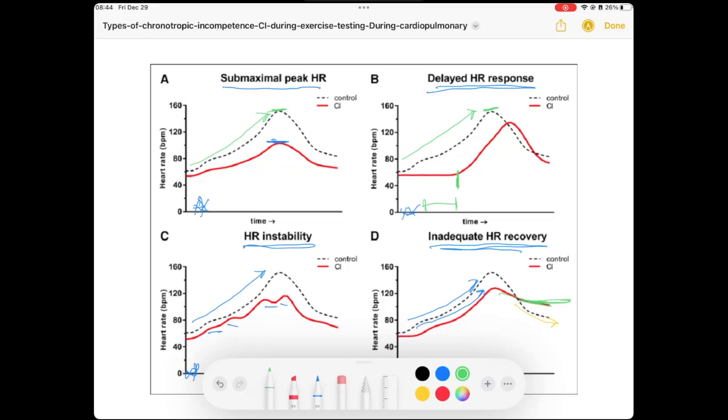We think of the chronotropic incompetence as on a spectrum. Is it the sinus node itself that is unhealthy, maybe from systemic heart disease, structural heart disease, or is it because of some extrinsic cause?